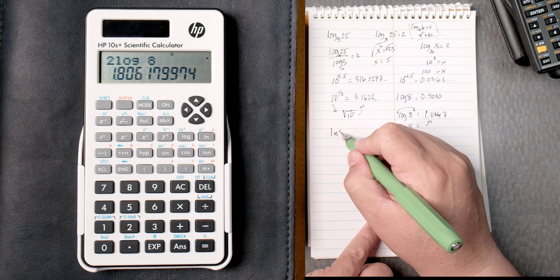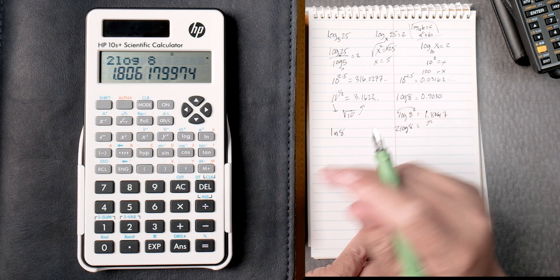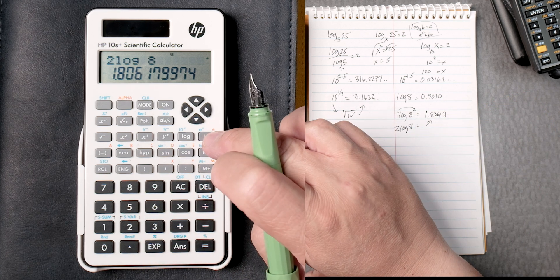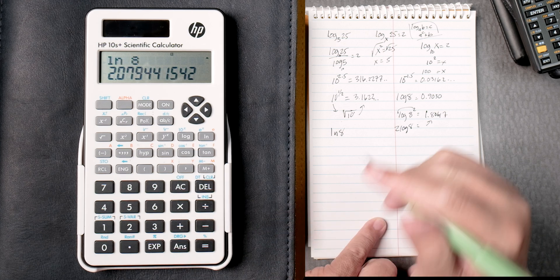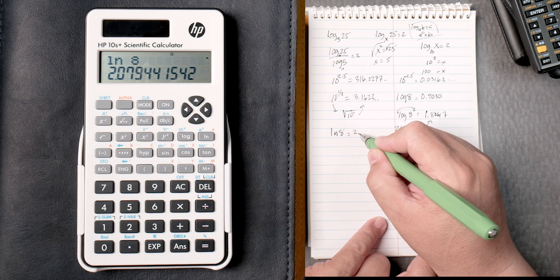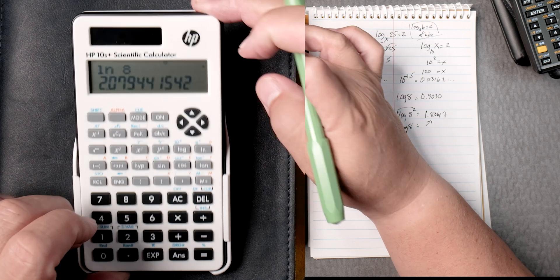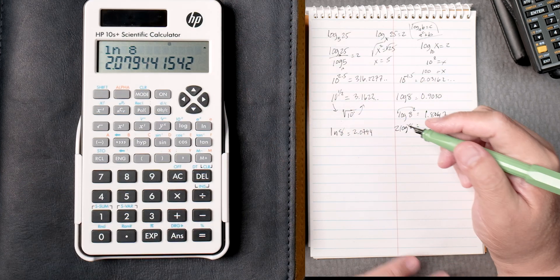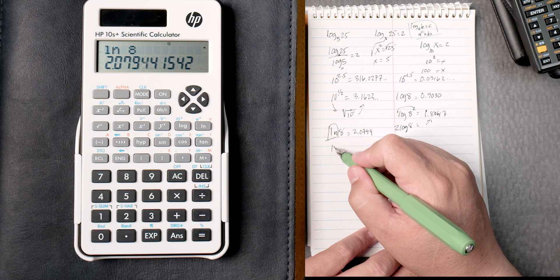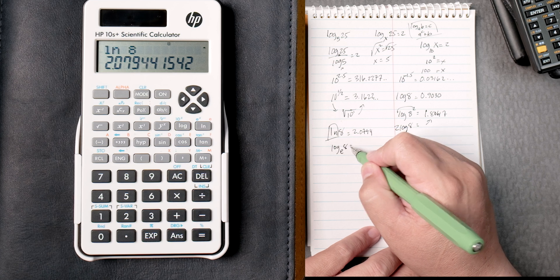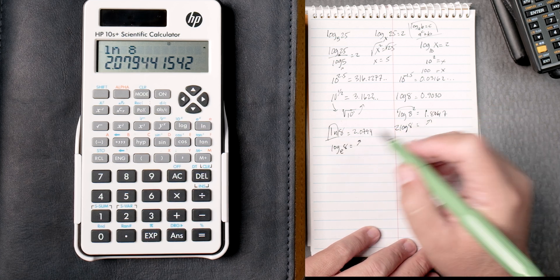Natural log of 8. So you press natural log, which is over here. You press 8 equals. And that gives you 2.0794. Now, natural log is really the log of base E, 8, which gives you this answer.